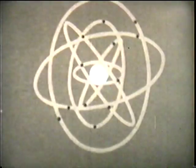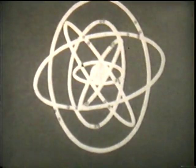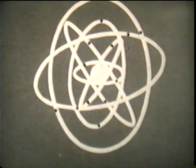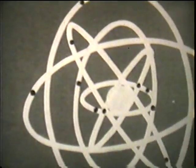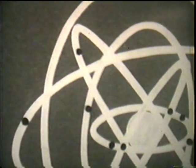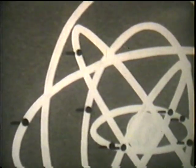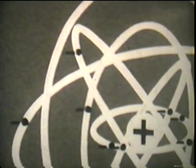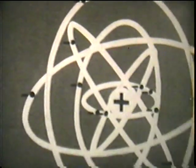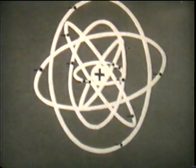Every atom consists of a central core, or nucleus, around which revolve a number of smaller particles called electrons. These electrons travel in orbits of different radii. Each electron carries a negative charge of electricity, and the nucleus, a positive charge.